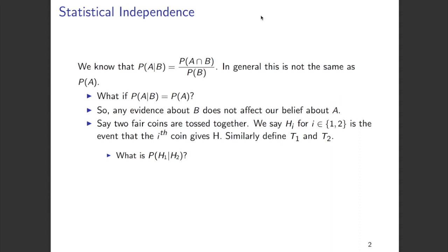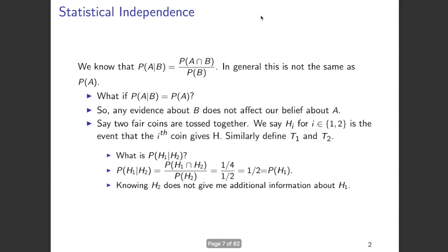Let's see how we can get this mathematically. Probability of H1 given H2 is nothing but probability of H1 intersection H2 divided by probability of H2. Probability of H1 intersection H2 is the probability of getting heads in both the first and second coin tosses. Only one out of four options results in heads in both tosses, so that probability is 1 over 4. The probability of a head in the second coin toss is one half. So probability of H1 given H2 is one-fourth divided by one-half, which is one half — the same as the probability of H1.